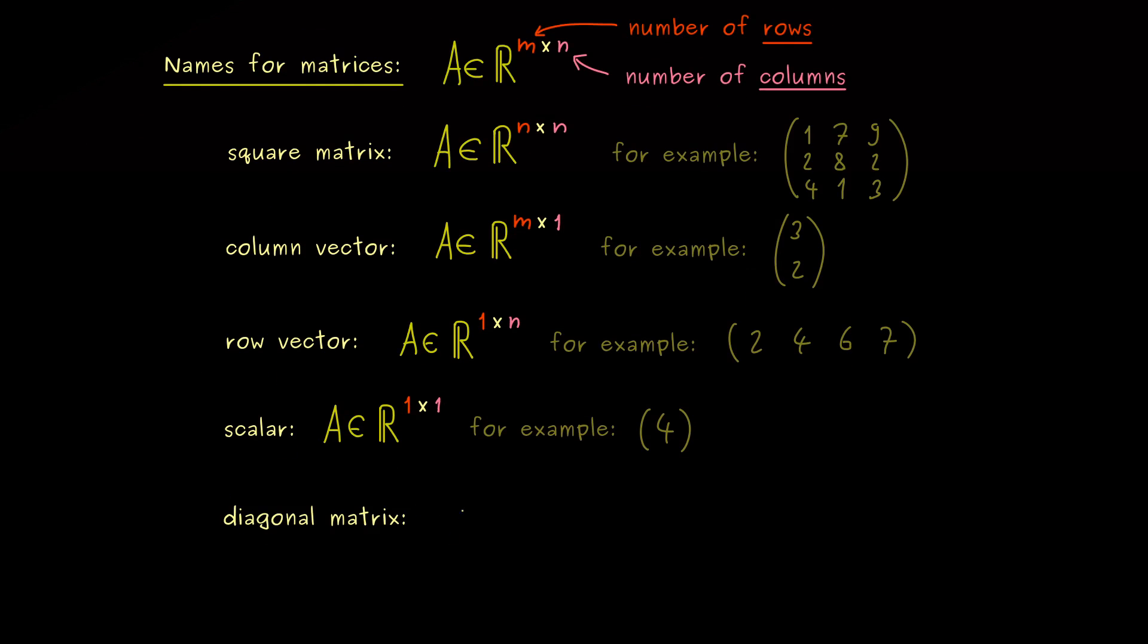For example a very important one is a so called diagonal matrix. Often it will be a square matrix but the notion also makes sense for general matrices. Indeed the idea here is that only on the diagonal of the matrix we find non-vanishing numbers. In other words all the entries outside are just zeros.